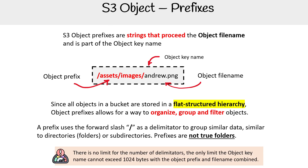But there is no limit for the number of delimiters. The only limit is that the object key name cannot exceed 1024 bytes, with the object prefix and the file name combined.